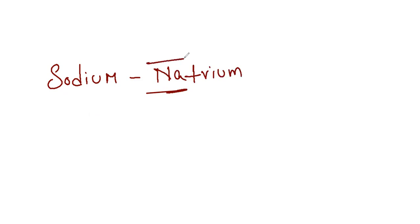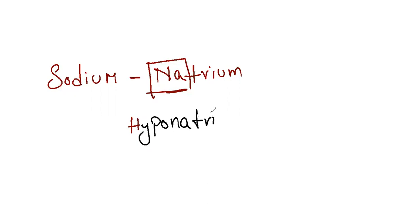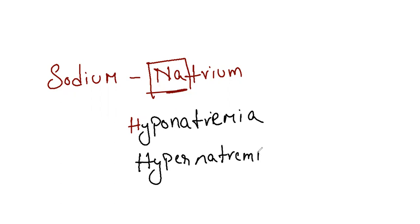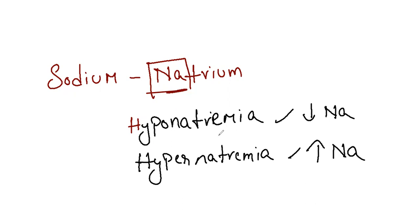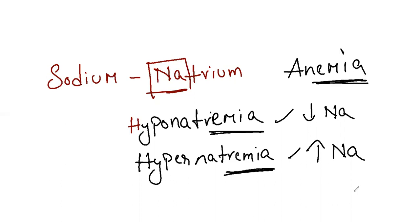Na means natrium. Natrium means sodium in Greek. That's why we have Na — natrium. So that's why you will be having hyponatremia. Hyponatremia is decreased sodium levels in the blood. Hypernatremia is increased sodium levels in the blood. Whenever you have '-emia,' it denotes the blood. For example, anemia is decreased amount of hemoglobin in the blood. So '-emia' is the word related to the blood.